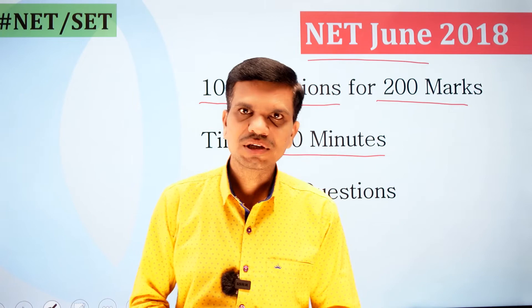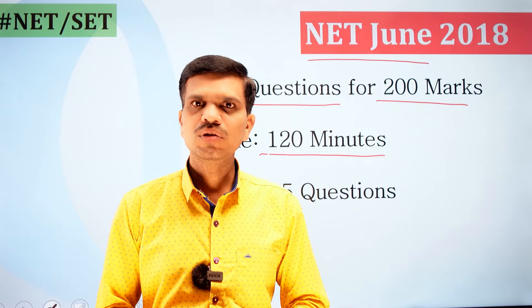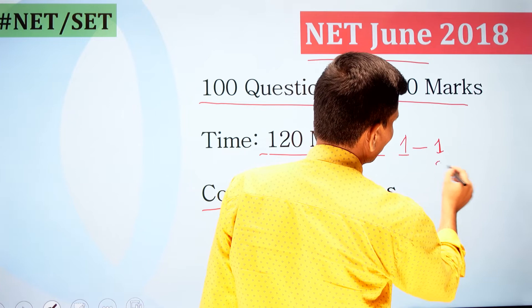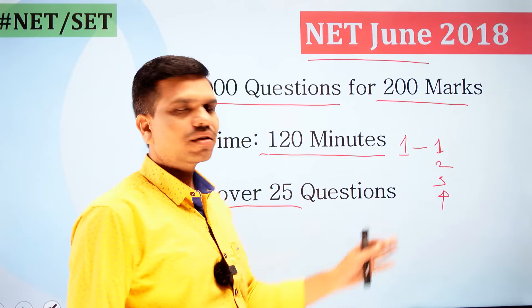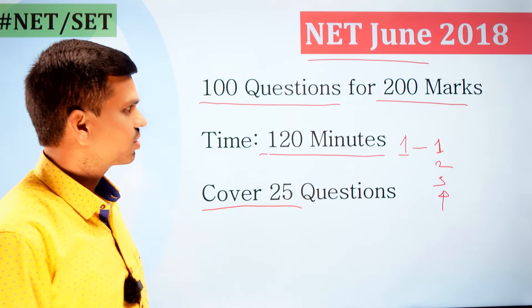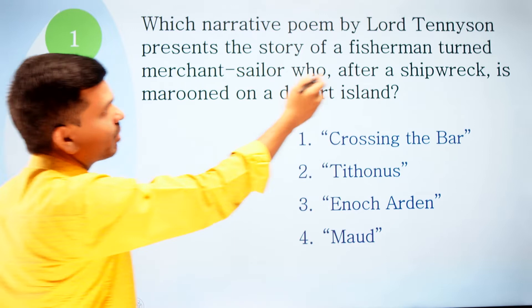Dear students, please take a pen and paper and write down question number one. Before the question number, write down your answer — one, two, three, or four — so you can check your answer immediately as I tell you the correct options. In this way you can prepare and solve the question paper we are going to discuss. Now let's start with the very first question.